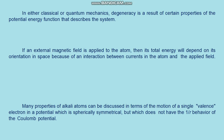In an external magnetic field the degeneracy with respect to m_l is removed and the atom has different energy levels for different m_l values. If the external magnetic field is gradually reduced in intensity, the dependence of the total energy on m_l is reduced proportionally. When the field is reduced to zero, the energy levels corresponding to different values of m_l degenerate into a single energy level and the corresponding eigenfunctions become degenerate.